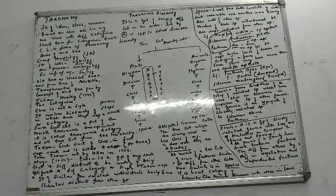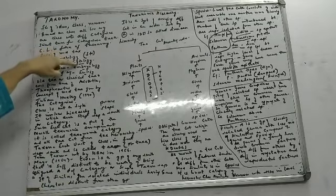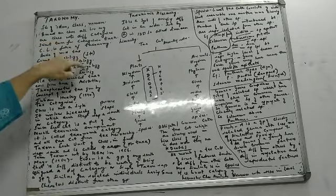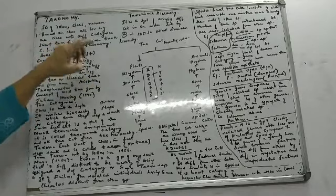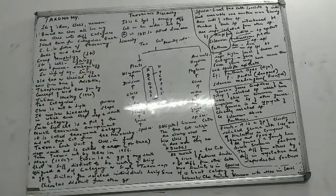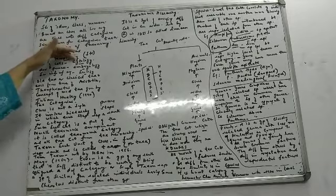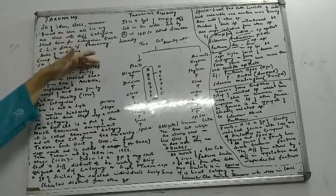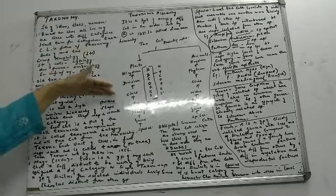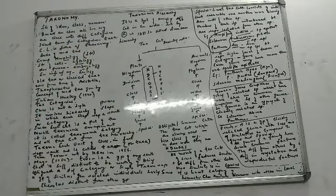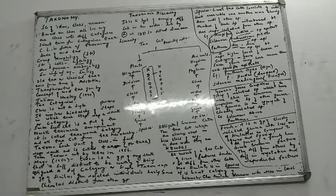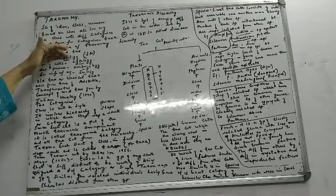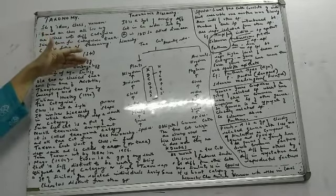The four basic pillars of modern taxonomy are: morphology — structure; cytology — structure of cells; embryology — development process; and ecology — ecological history of an organism.